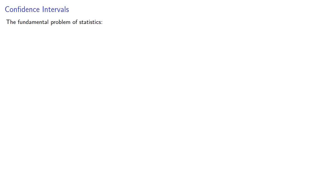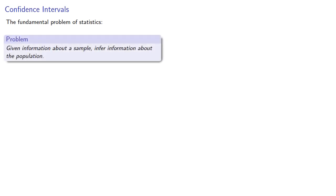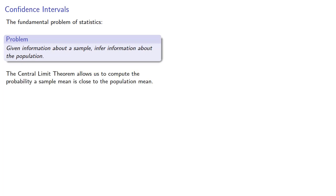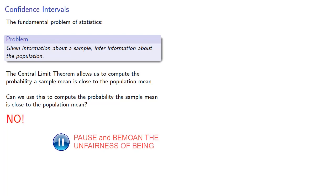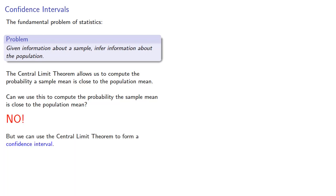How does this relate to the fundamental problem of statistics — given information about a sample, infer information about the population? The central limit theorem allows us to compute the probability a sample mean is close to the population mean. But we can use the central limit theorem to form what we call a confidence interval.